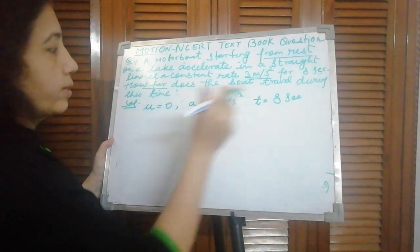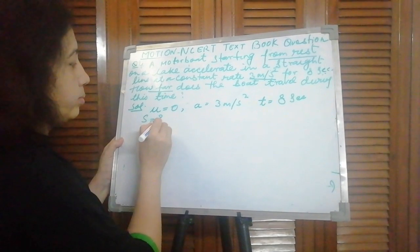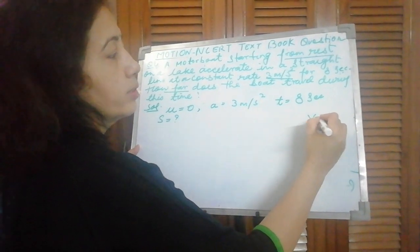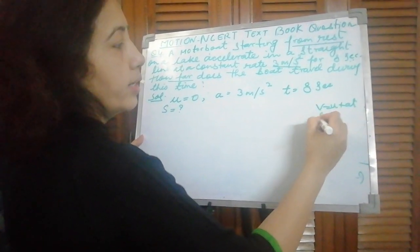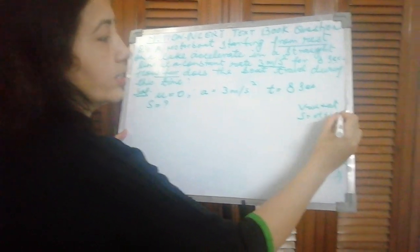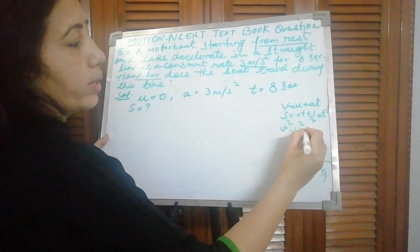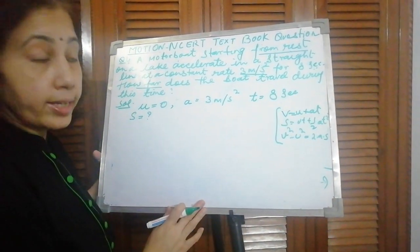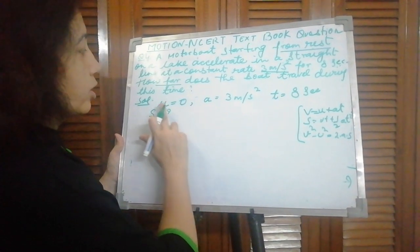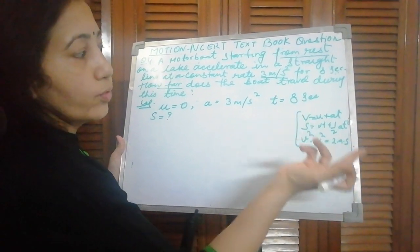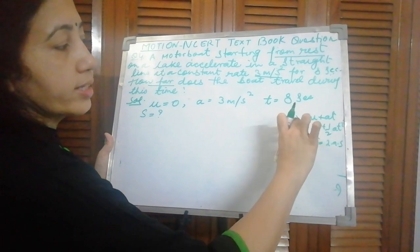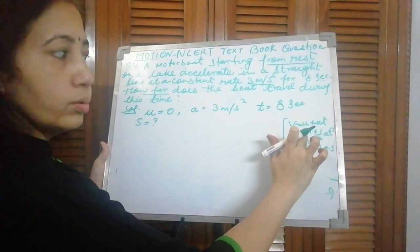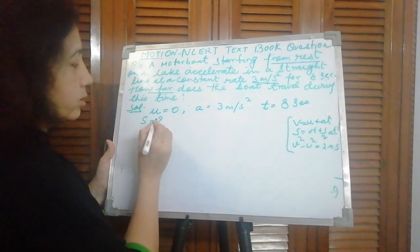How far does the boat travel? Far means distance is asked. Distance in equations of motion we write as S. Now in the 3 equations of motion: S = ut + ½at², v² - u² = 2as. You have to find out which equation is suitable. T given, A given, U given. First equation we can't use, V is not there. S comes in only these two. Second equation: U we know, T we know, A we know. So second equation.